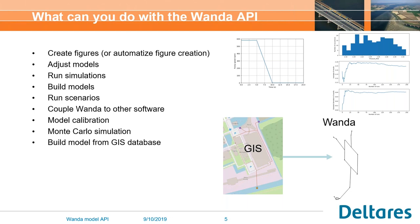If you can automate it, it makes your job a lot easier. You can also adjust models, run simulations, and build models from scratch. For example, if you have data in a GIS database, you can read this and create a Wanda model. I made a GIS model of a non-existing pipeline system, and then with this Wanda API, I created a Wanda model out of it which can then be used to run simulations.